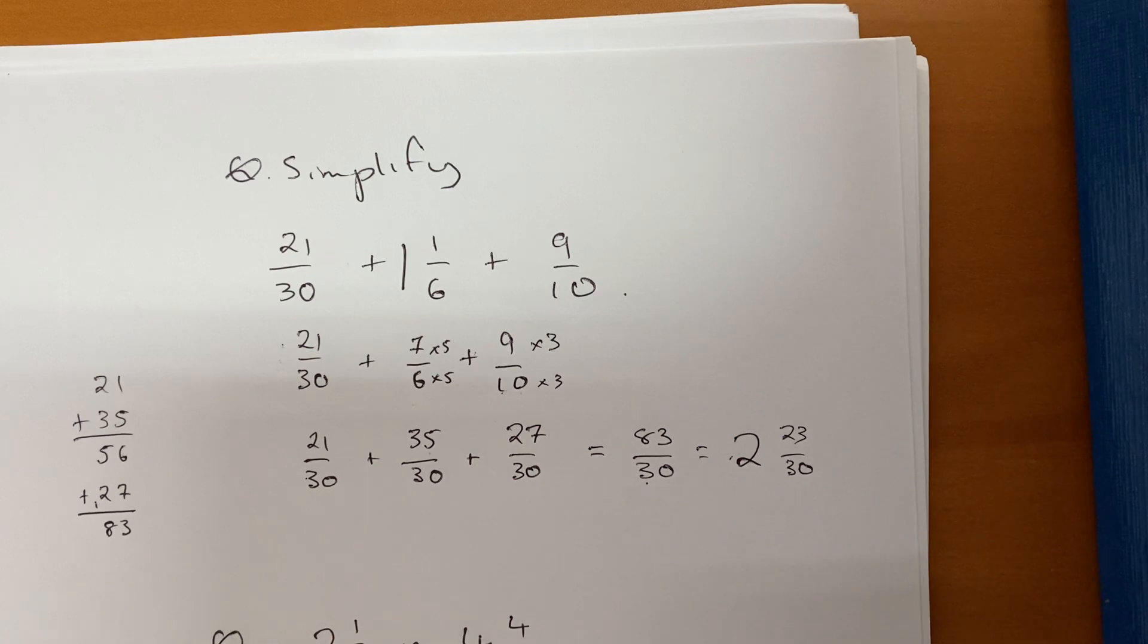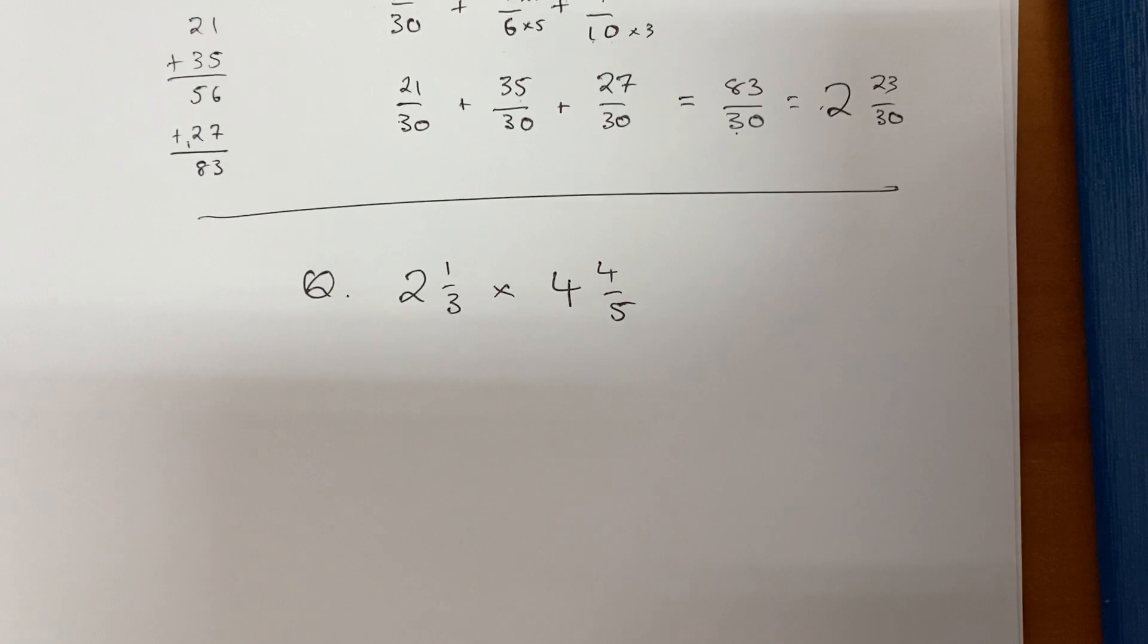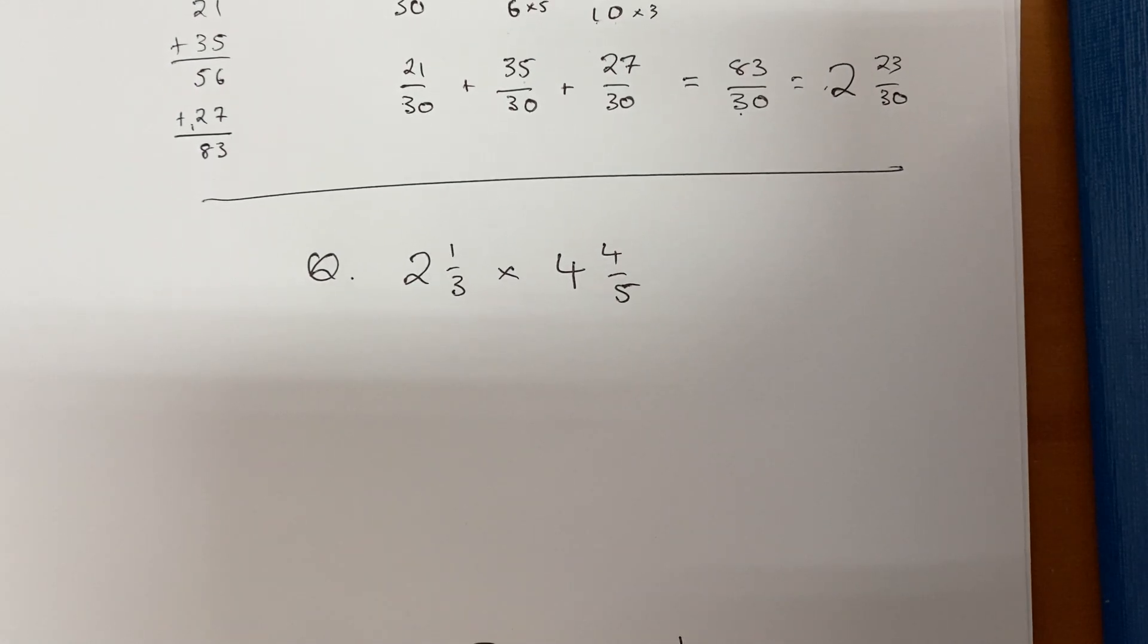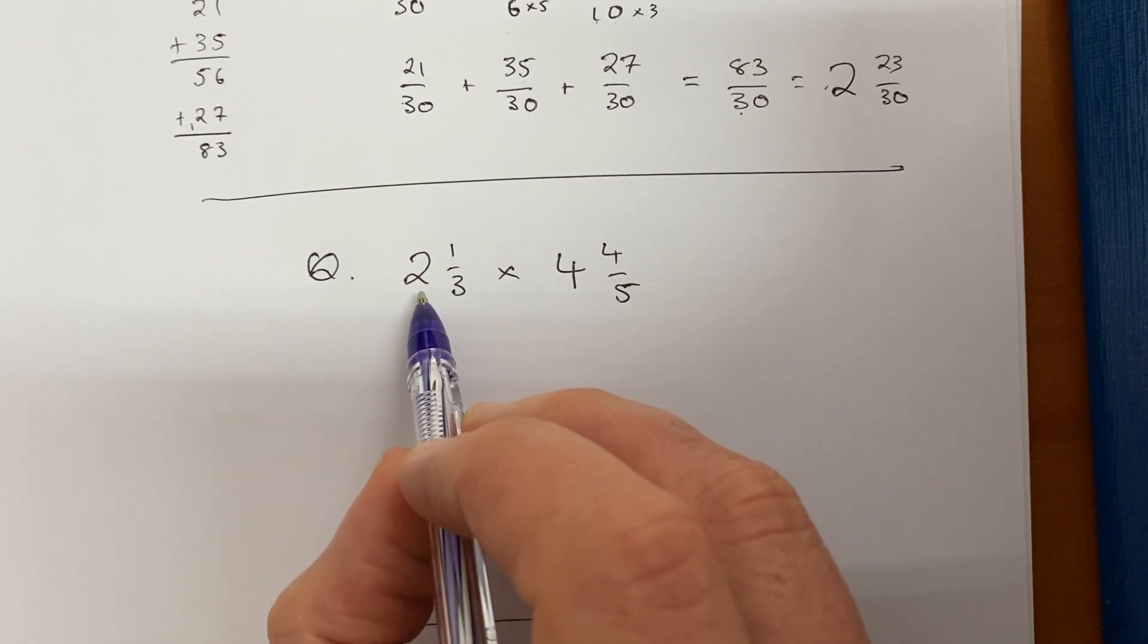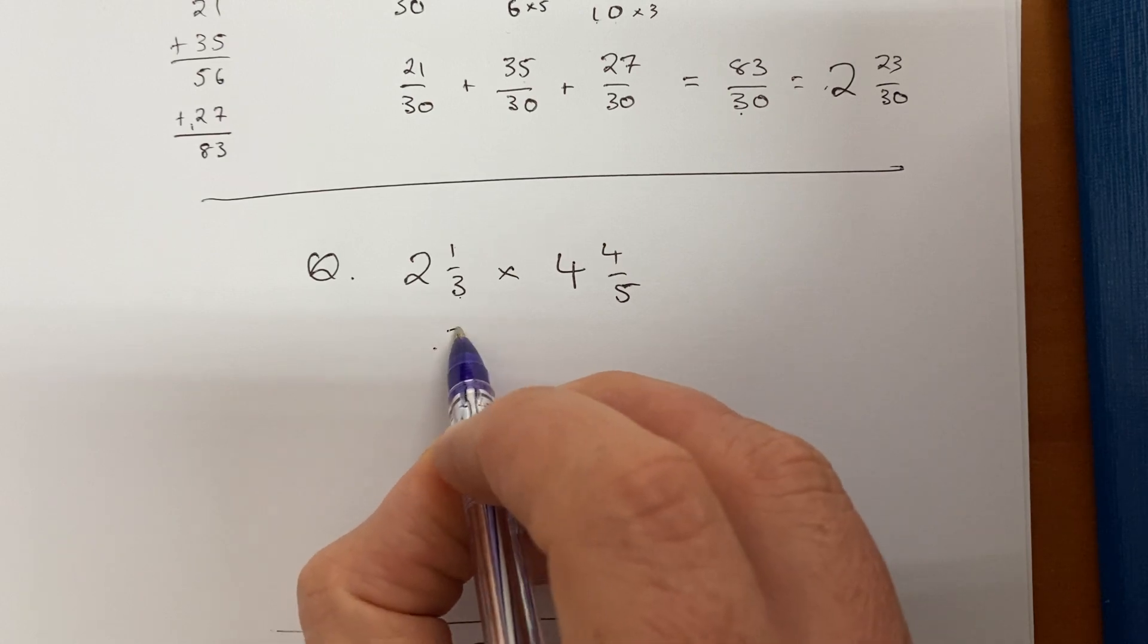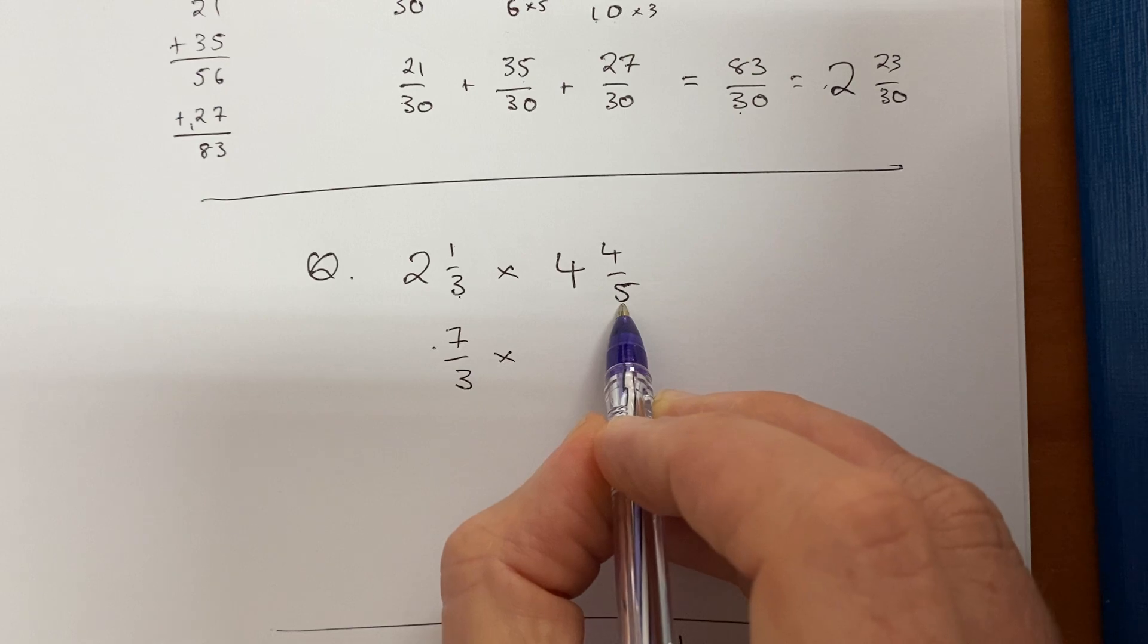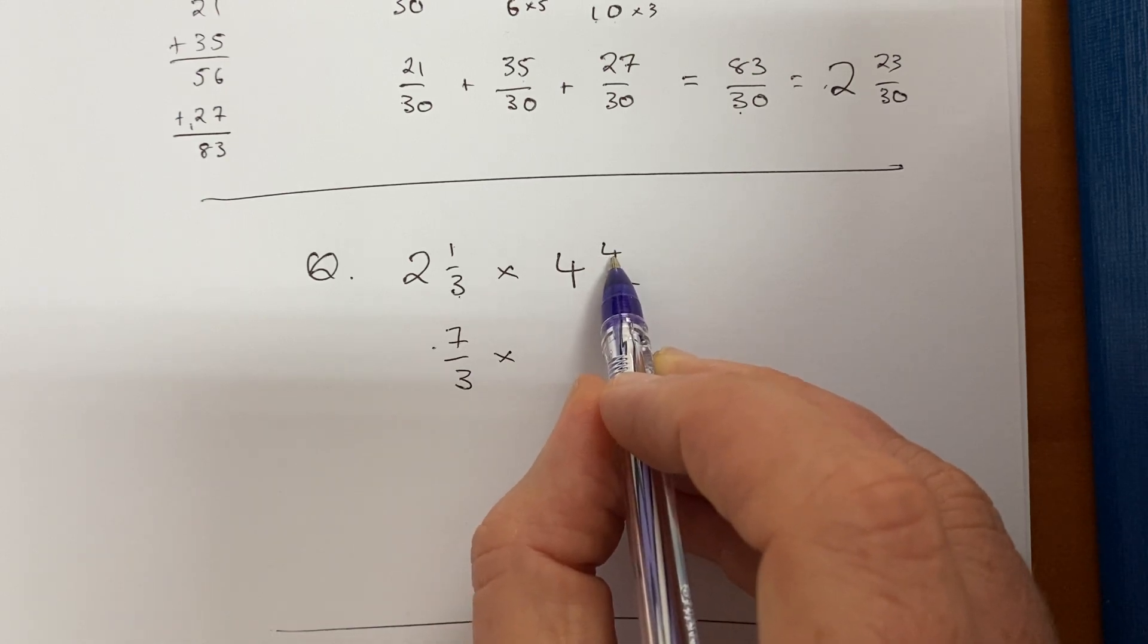Okay, what happens if we deal with a question with some multiplication of mixed numbers? Can I just multiply the whole number separately? No, I must include it in the fraction. So you've got to change these to improper fractions. Okay, so change the first one: two times three gives six, add the one gives seven, so that's seven thirds. Multiply by four times five gives 20, add the four gives 24 over five.